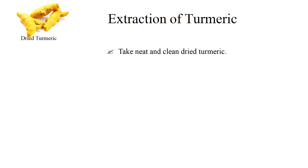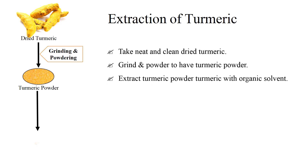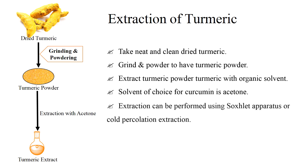For extraction, take neat and clean dried turmeric, grind and powder it to have turmeric powder. Extract the turmeric powder with an organic solvent. The solvent of choice for the isolation of curcumin is acetone. Extraction can be performed using a Soxhlet apparatus or cold percolation extraction method.